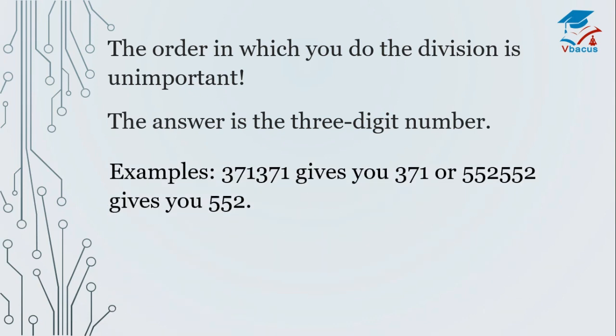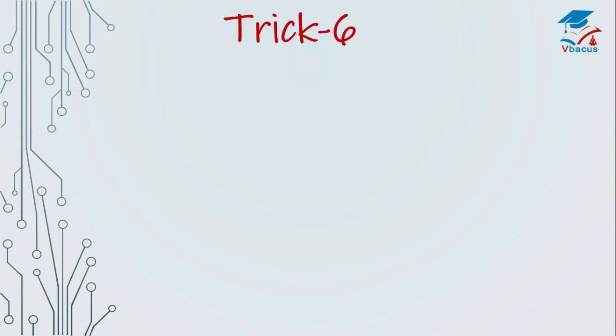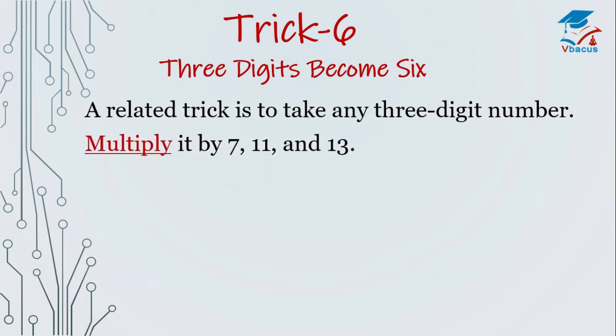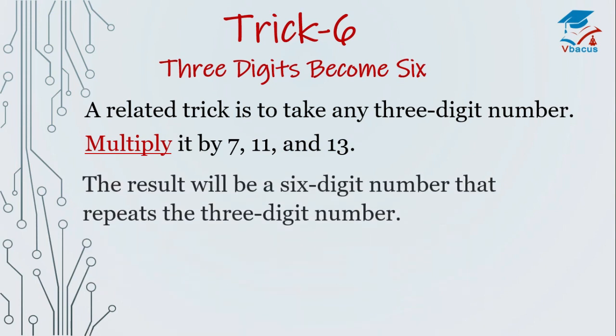Example 371, 371 gives you 371. Or 552, 552 gives you 552. Trick 7, sorry 6. 3 digits become 6. A related trick is to take any 3-digit number, multiply it by 7, then 11, and then 13. The result will be a 6-digit number that repeats the 3-digit number. For example, 361 becomes 361, 361.